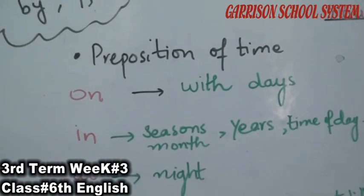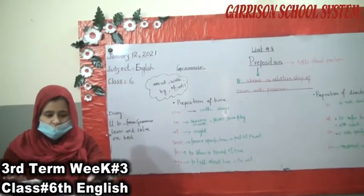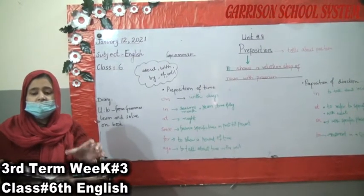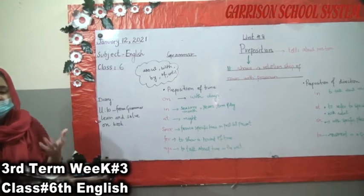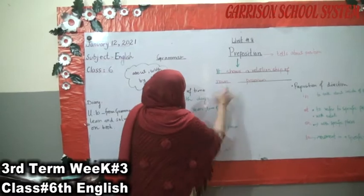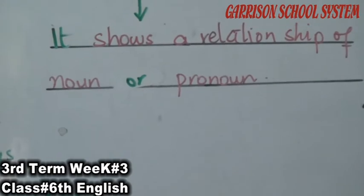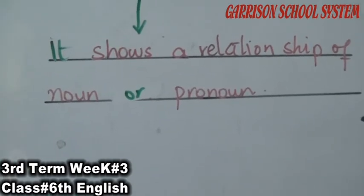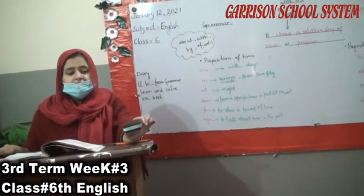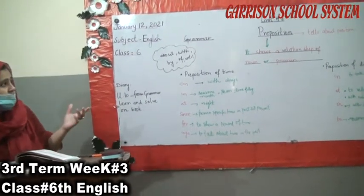For example: 'The duster is on the table.' Duster is a noun. The preposition tells us about the position — the relationship of noun and pronoun. 'Duster is on the table' — the position is 'on the table.' It tells about the position.